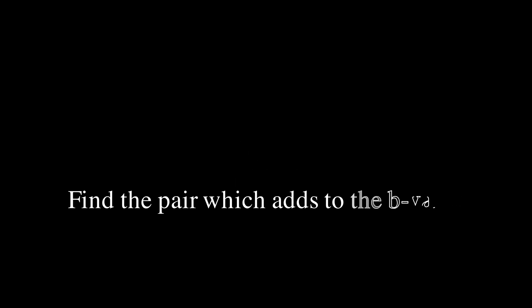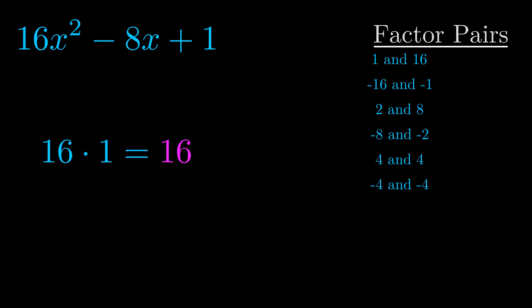The b value is the coefficient on the x term. That's the middle term, the one that we haven't done anything with yet. And really this is the only factor pair that we need.